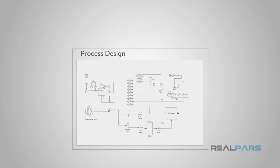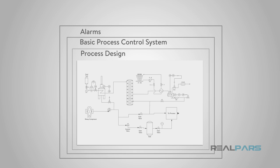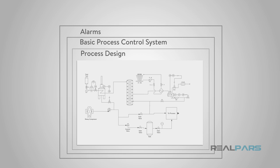Regardless of the types of risks, the process design itself, the basic process control system, alarms, and operator intervention provide the first layers of protection for the process. Each of these layers provides approximately a ten-fold or greater protection to the process plant than the layer below.